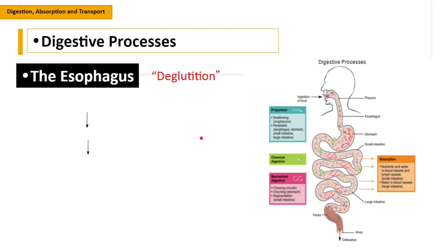Next is the esophagus. After eating, we will now swallow the food. The scientific term for swallowing is deglutition. Deglutition has three stages. The first is the voluntary stage — swallowing is voluntary because we can control it. The bolus is passed through the oropharynx.